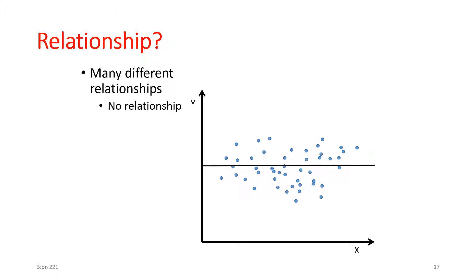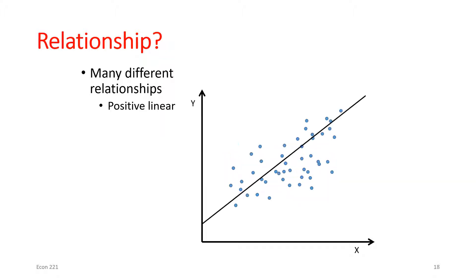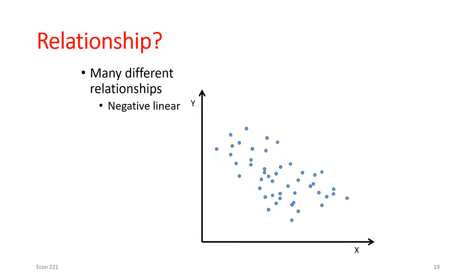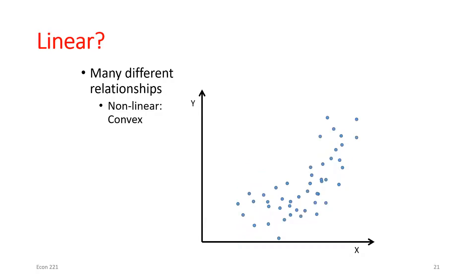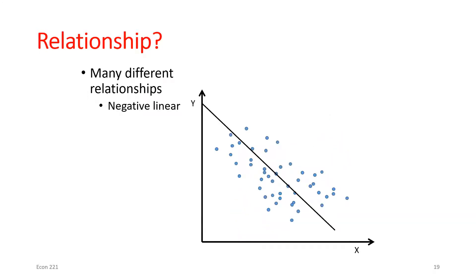Here's a relationship where B was equal to zero, here's one where B would be positive, and here's one where B would be negative. We're always going to estimate linear lines in this class. If you take 321 or 424, or other upper-level courses, you might do things with non-linear relationships, but we'll strictly focus on linear relationships here.